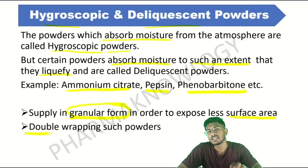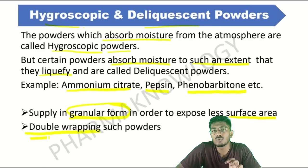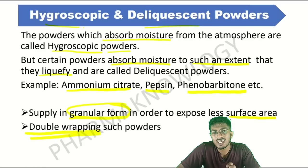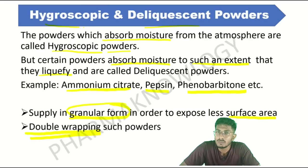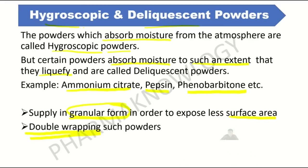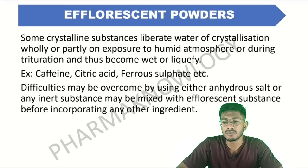For all such substances, we can do double wrapping. By double wrapping, we can prevent exposure to the atmosphere. Direct contact with air will be eliminated and this problem can be solved.